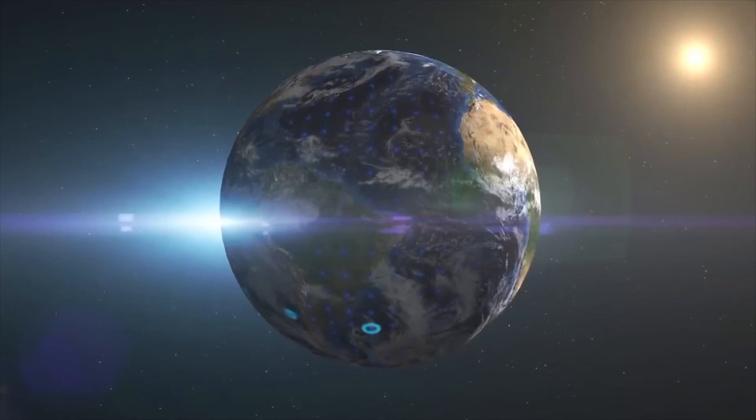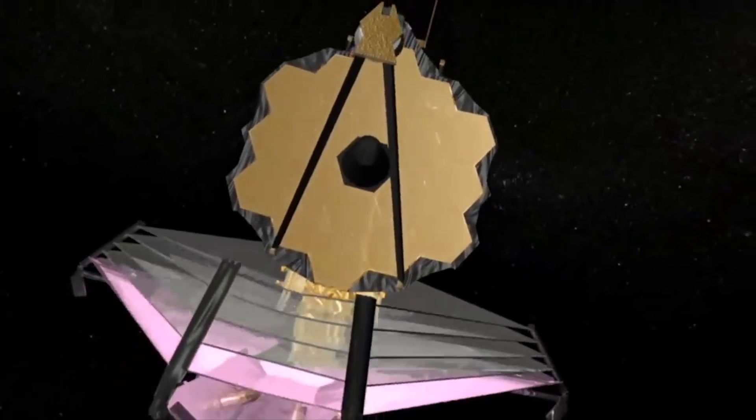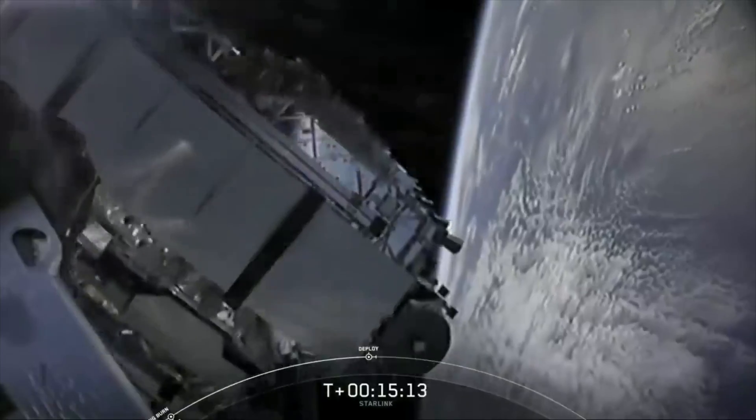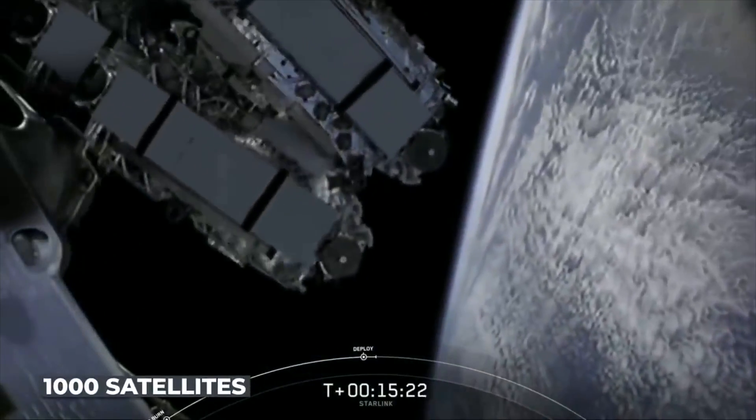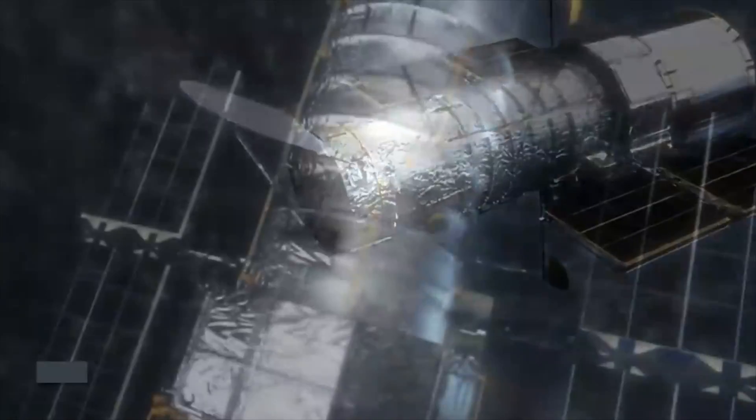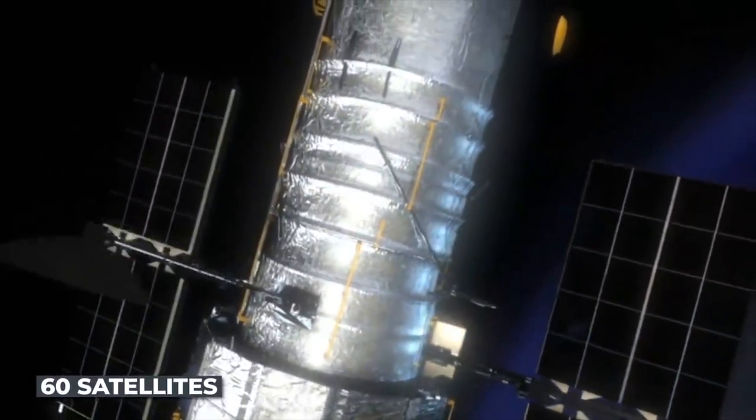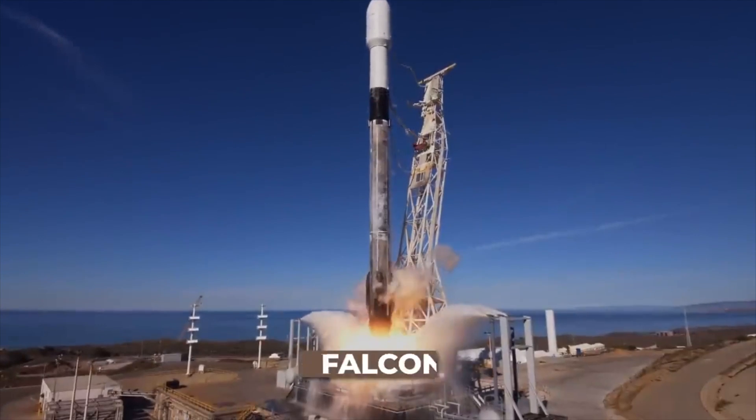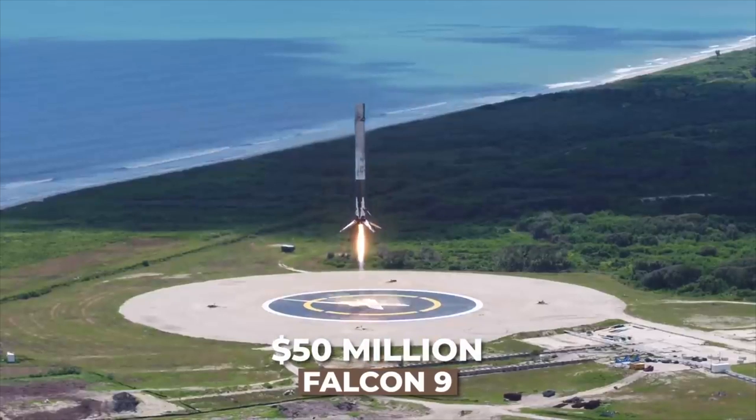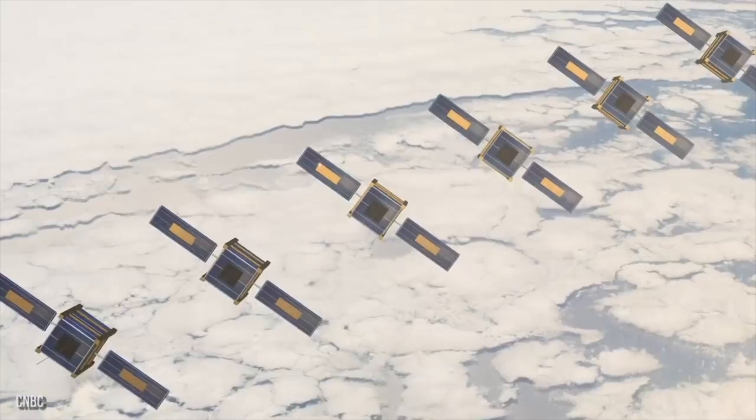SpaceX plans to launch up to 30,000 of these new satellites over time using its next generation rocket called Starship, which can carry 400 satellites at once. SpaceX also hopes to expand its service beyond Earth by providing internet access to Mars colonists using a similar network of satellites around the Red Planet.